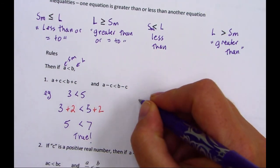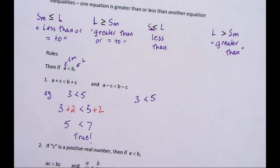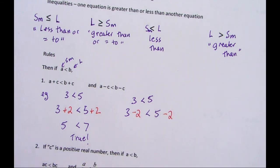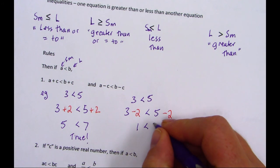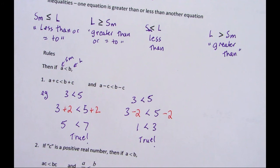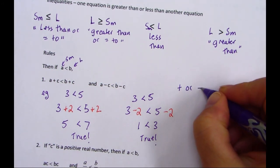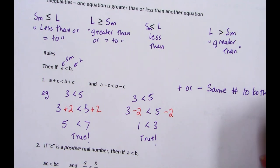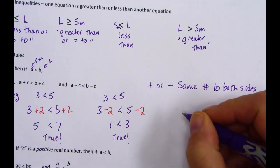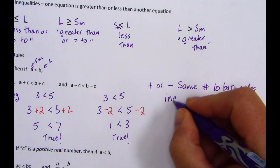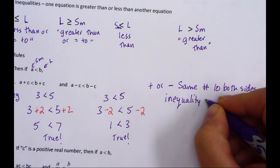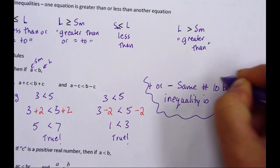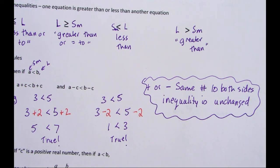Same thing with subtraction. If I have 3 is less than 5 again and subtract 2 from both sides, I get 1 is less than 3. That is still true. So you can add or subtract the same number to both sides and the inequality is unchanged — you don't need to worry about doing anything with the inequality sign.